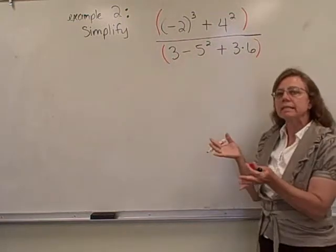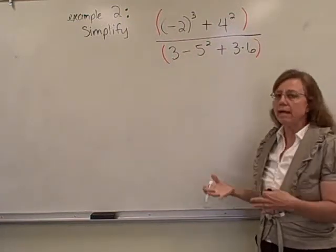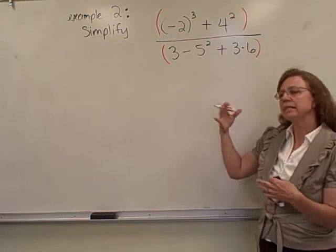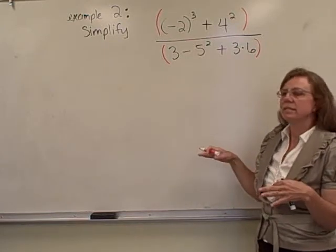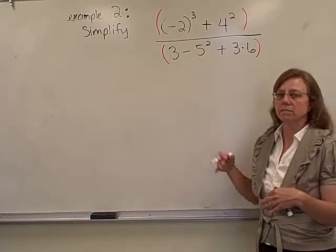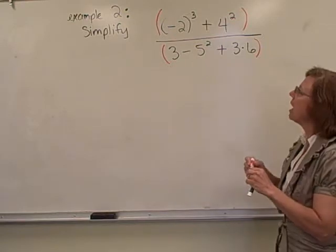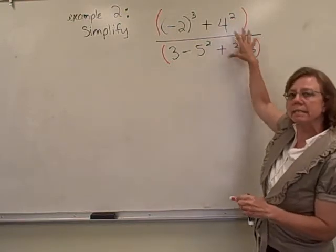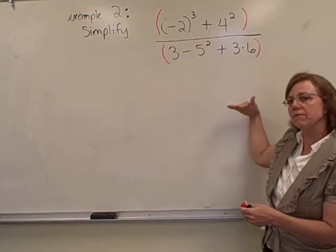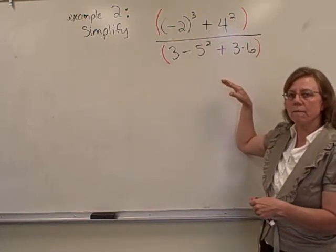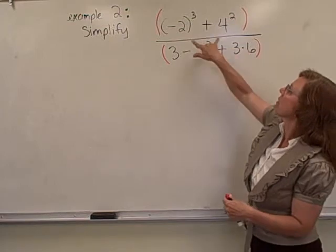with parentheses around both the numerator and the denominator, because we have to clean those up first and then take care of the division in the fraction bar last, in this case. And so within these parentheses now that I've added, because of the big fraction bar, we're going to again follow order of operations inside those. So,